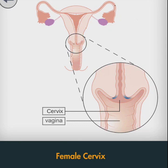In this article we shall look at the structure of the cervix, its vascular supply, innervation, functions, and clinical relevance. The cervix is composed of two regions: the ectocervix and the endocervical canal. The ectocervix is the portion of the cervix that projects into the vagina; it is lined by stratified squamous non-keratinized epithelium.